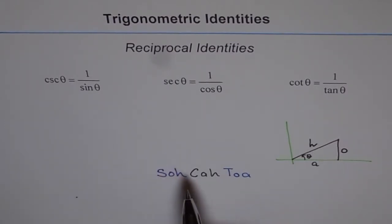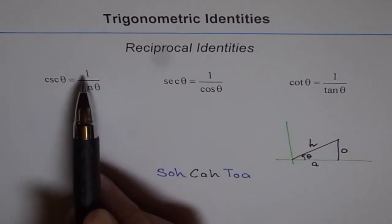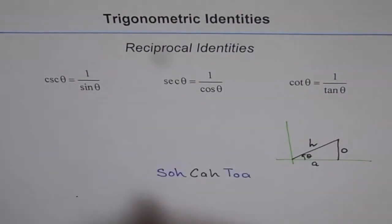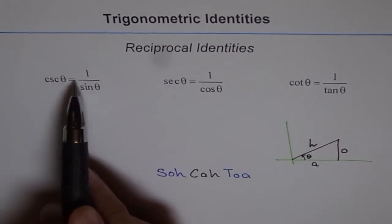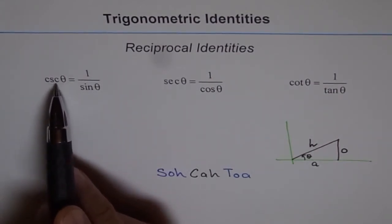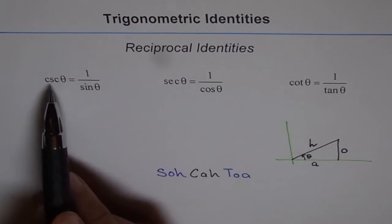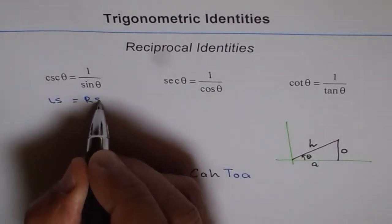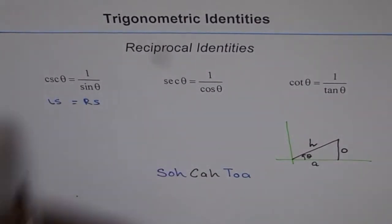We can write 1 over sine theta. To prove identities, you follow a rule: we need to show the left side always equals the right side. We can start from either side — in this case, let's start from the right side.